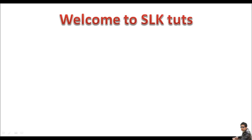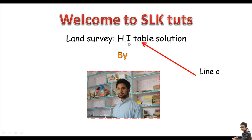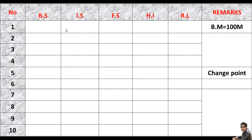Assalamualaikum YouTubers, welcome back to SLK Tools. In this section we'll be talking in detail about the calculation of the HI table in land survey. The HI table is also known as the line of collimation table. Here I have a table containing columns and rows — the columns represent the backside, inter side, fore side, and the HI, which is why this table is known as the HI table.